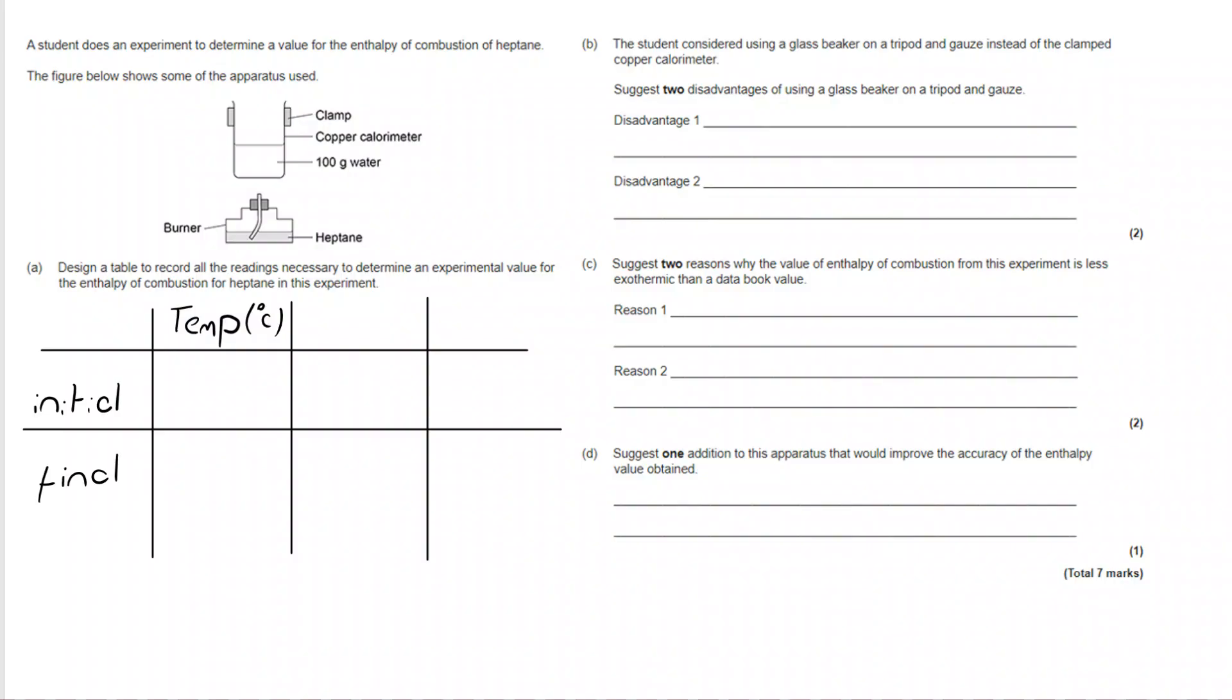But actually, if we're going to know how many joules or kilojoules of energy have been released per mole, we need to know how many moles of heptane have burned. We can't measure moles of heptane directly, so we need to measure the mass of the burner, both before and after the reaction.